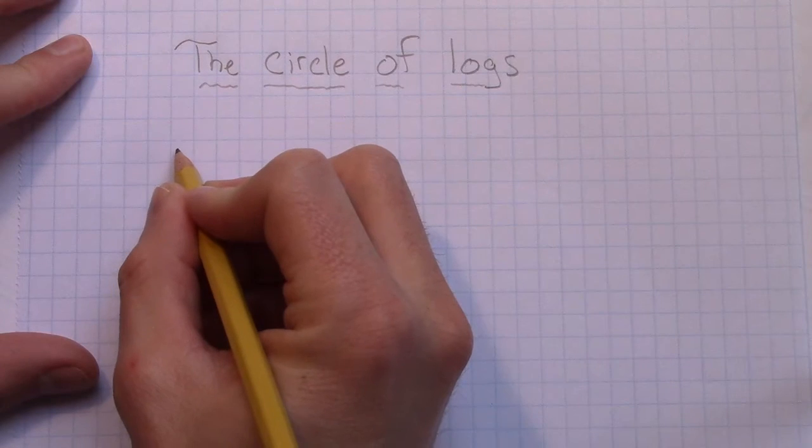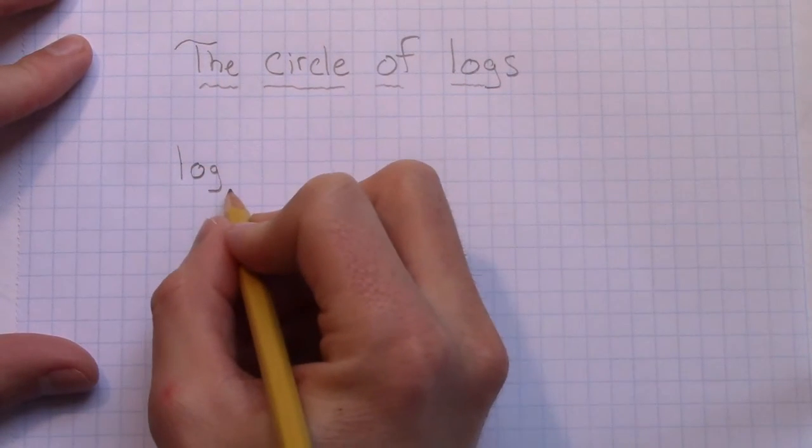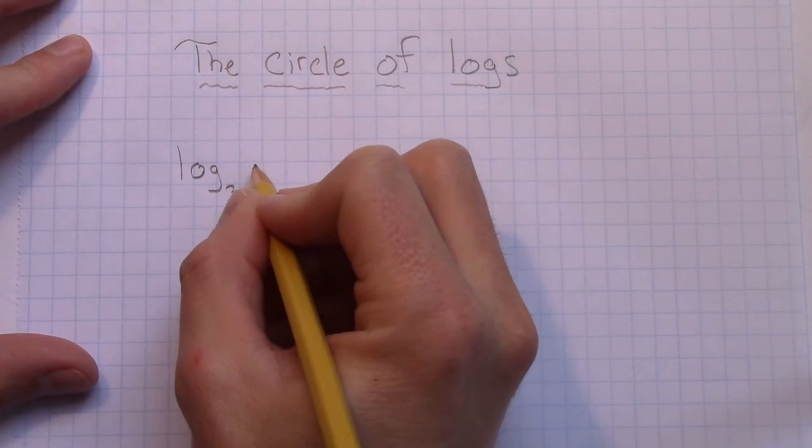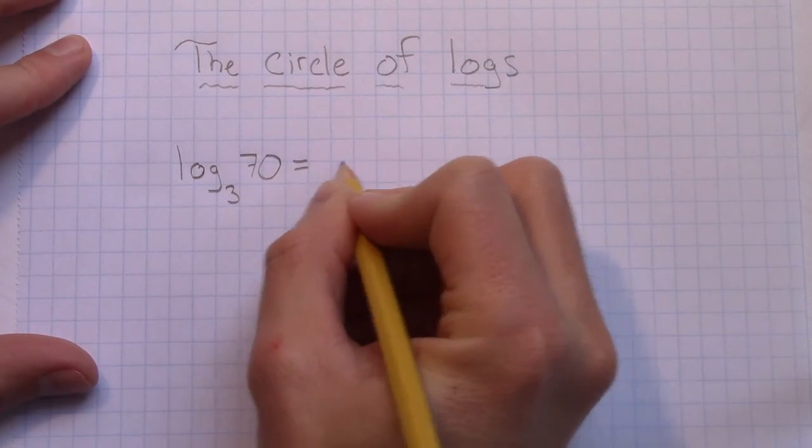So what we're talking about is if we have a logarithm. Let's say we have a log base 3 of 70, and that equals x, let's say.